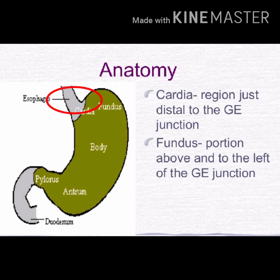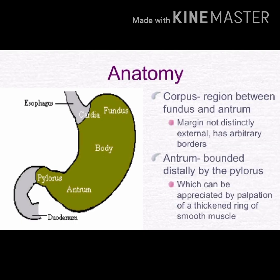Here the circle indicates the cardiac region, and the next circle indicates the fundus region. The third region is the body or corpus, located between the fundus and the antrum — it takes up a very large portion. Its margin is not distinctly external and it has oblique borders.